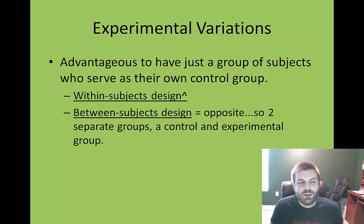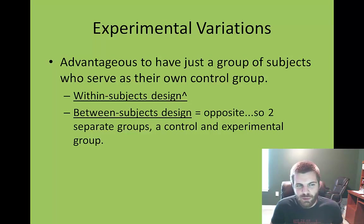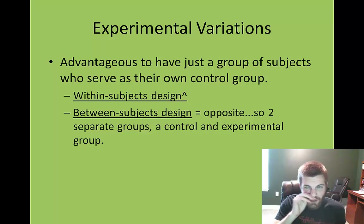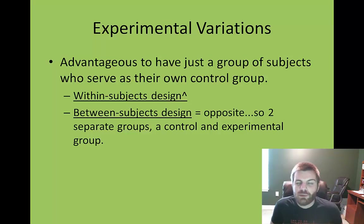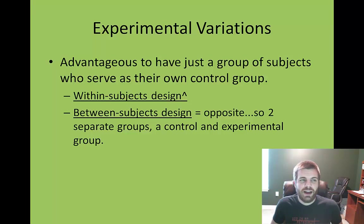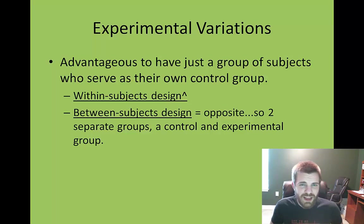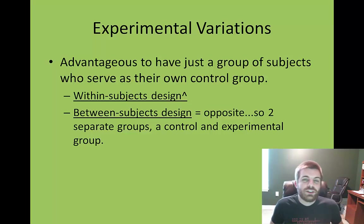In terms of group variation, it is preferred to use a within-subjects design, which means one group of subjects serves as both the experimental group and their own control group — the subjects are literally within both parts of the experiment. It is also possible to use a between-subjects design, where you have two separate groups: one control group and one experimental group. For instance, your first period class could act as the control group and your second period class as the experimental group, though having one class serve both roles within it is often preferable to avoid additional confounding variables.